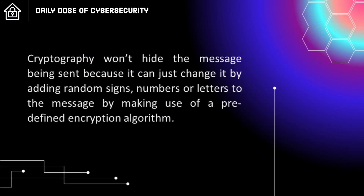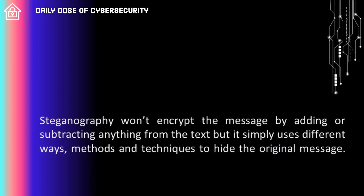Cryptography won't hide the message being sent because it can just change it by adding random signs, numbers, or letters to the message by making use of a predefined encryption algorithm. Steganography won't encrypt the message by adding or subtracting anything from the text, but it simply uses different ways, methods, and techniques to hide the original message.